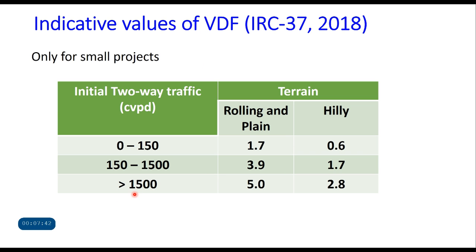If it is not possible to carry out an axle load survey — particularly for small projects — then IRC 37 suggests tentative VDF values for different traffic and terrain conditions. If initial two-way traffic commercial vehicles per day is less than 150, then for rolling and plain terrain this can be taken as 1.7 and for hilly terrain as 0.6. Similarly, for other traffic and terrain conditions you can choose VDF values from this table. However, these values should be taken only for small projects and not for bigger projects.